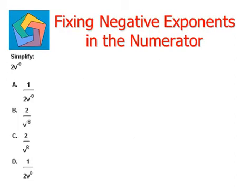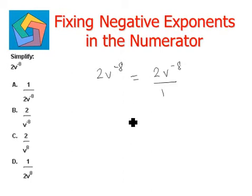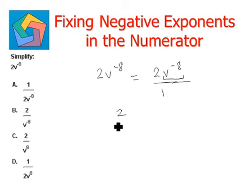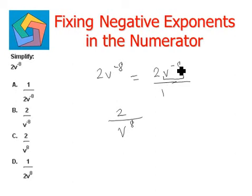Let's try one more: simplify 2v to the power of negative 8. This is nothing but an expression with denominator 1. What we need to do is move only that part of the expression which contains the negative exponent — that is, only v to the power of negative 8 will be moved to the denominator, not 2. The 2 will remain on top because it doesn't have a negative exponent. Always remember, only the part with a negative exponent goes down, not any other.